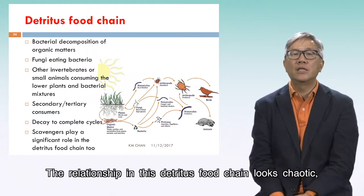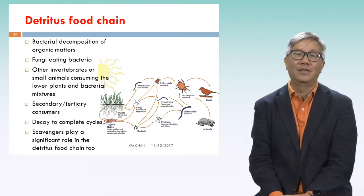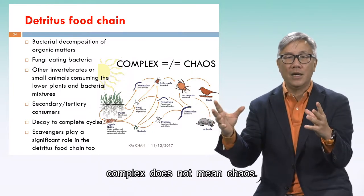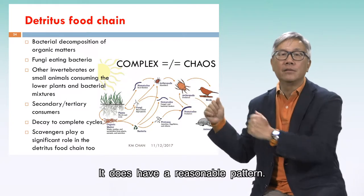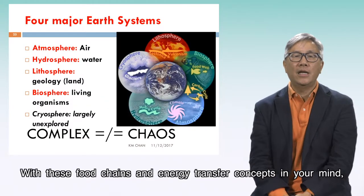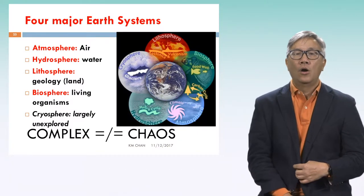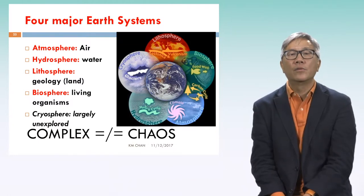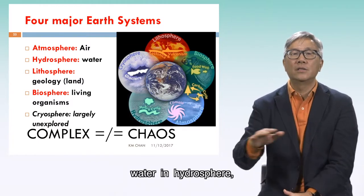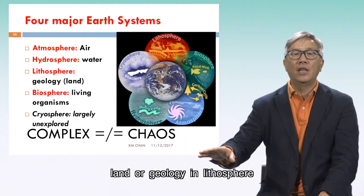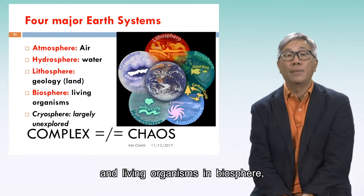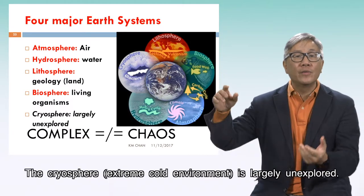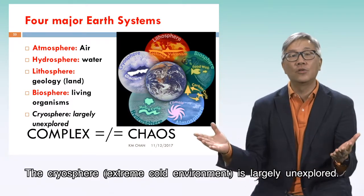The relationships in this detritus food chain may look chaotic, but this is a complex relationship — complex does not mean chaos, as it does have a reasonable pattern. With these food chain and energy transfer concepts in mind, on Earth we can apply them to air in the atmosphere, water in the hydrosphere, land or geology in the lithosphere, and living organisms in the biosphere. As the four major Earth systems, the cryosphere — extreme cold environments — is also largely unexplored.